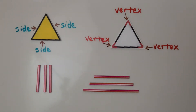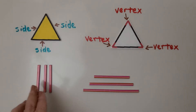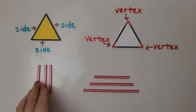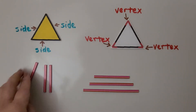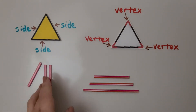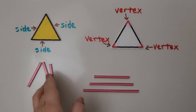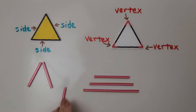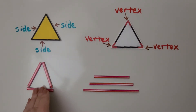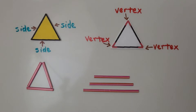We can use three equal length lines to make a triangle. Here we have three equal length lines, and I can make a triangle with them. I can put them like this, and I can put this one down here, and we can make a triangle.